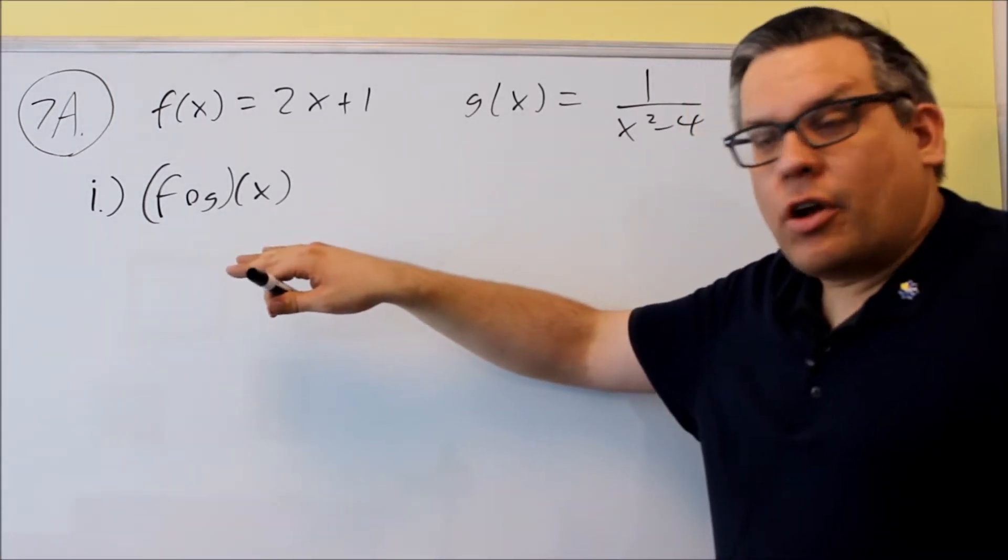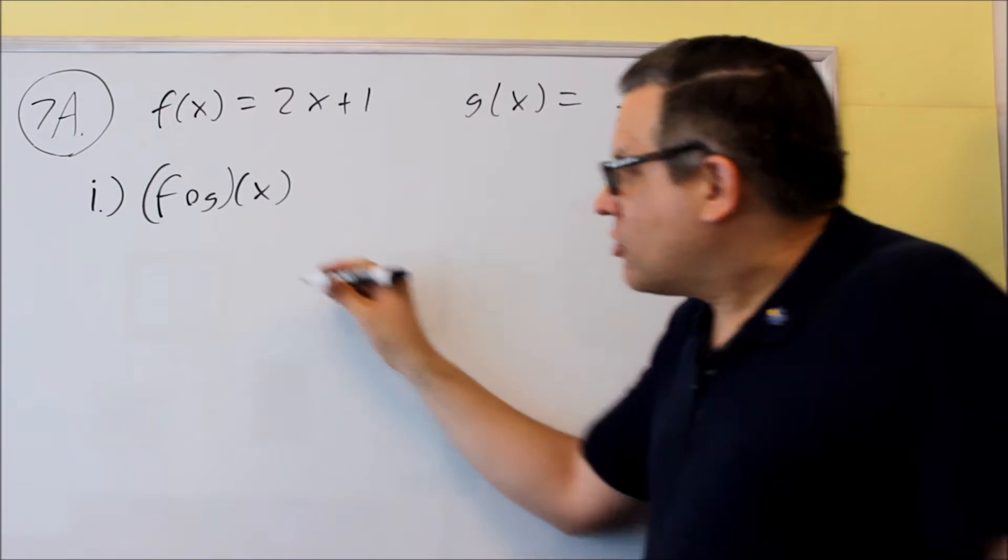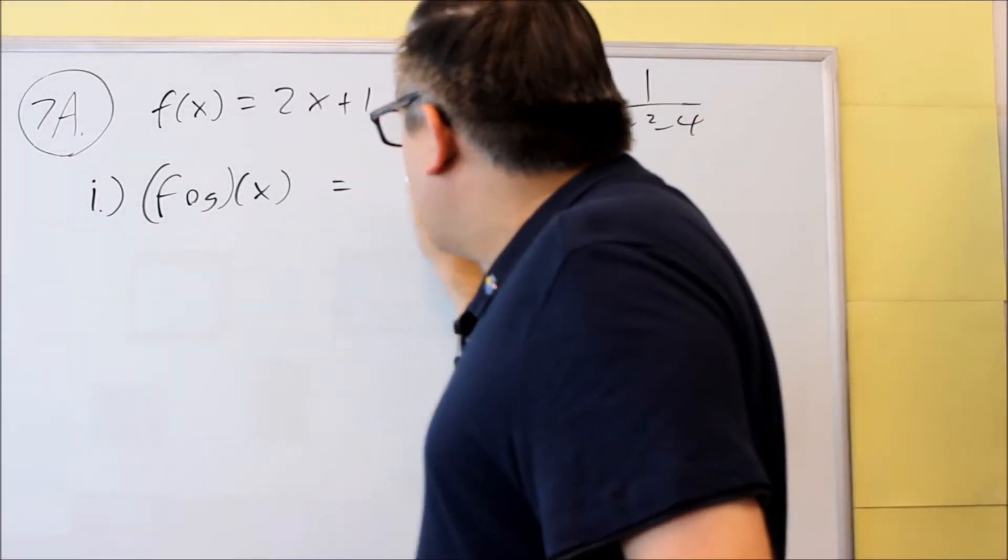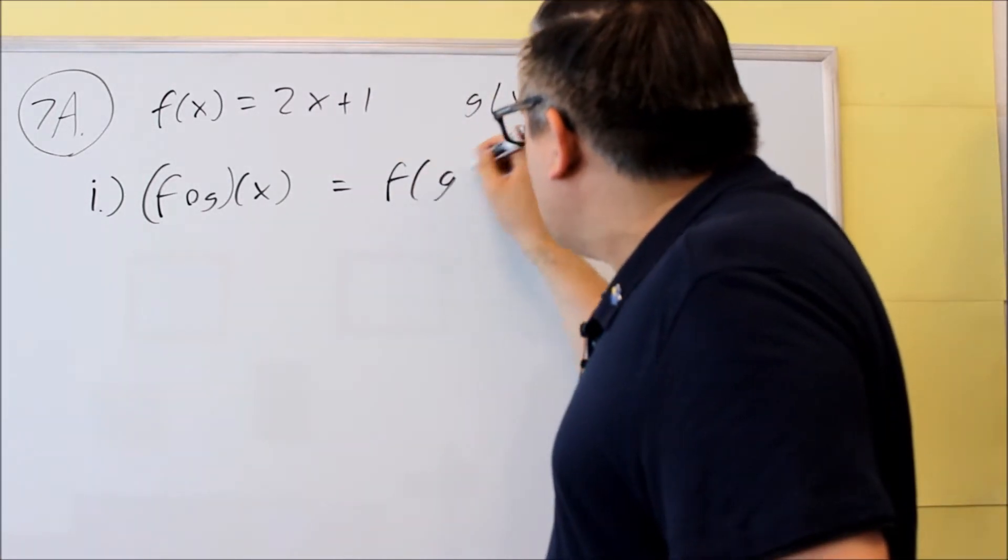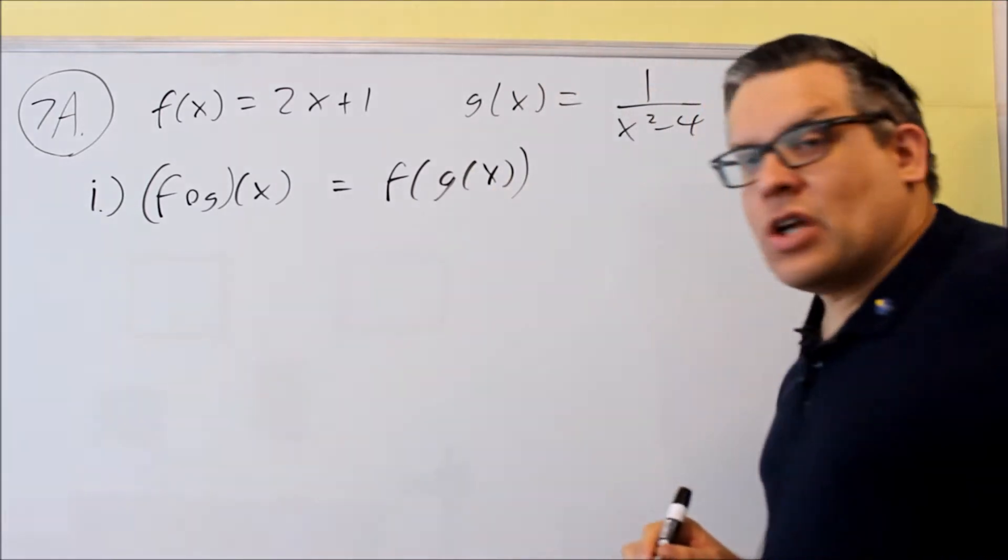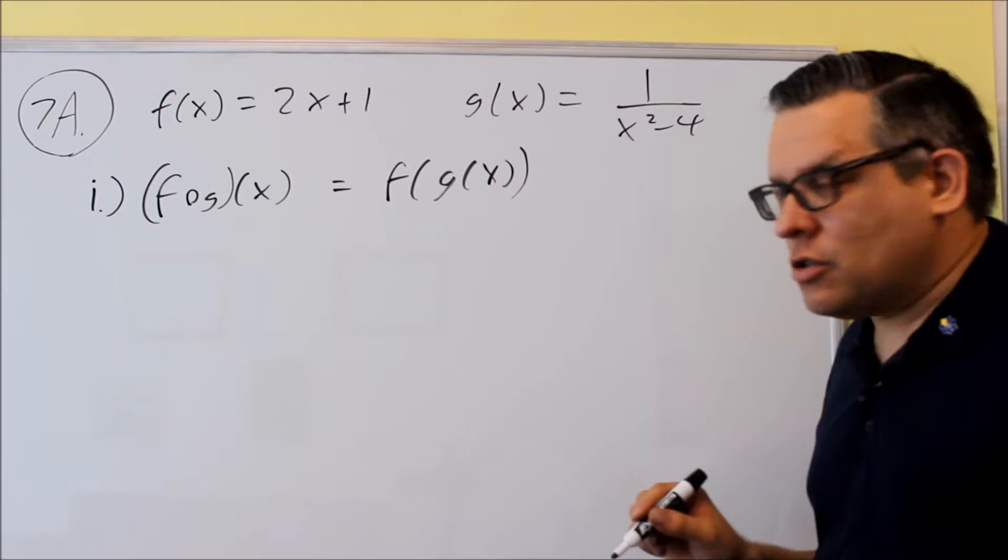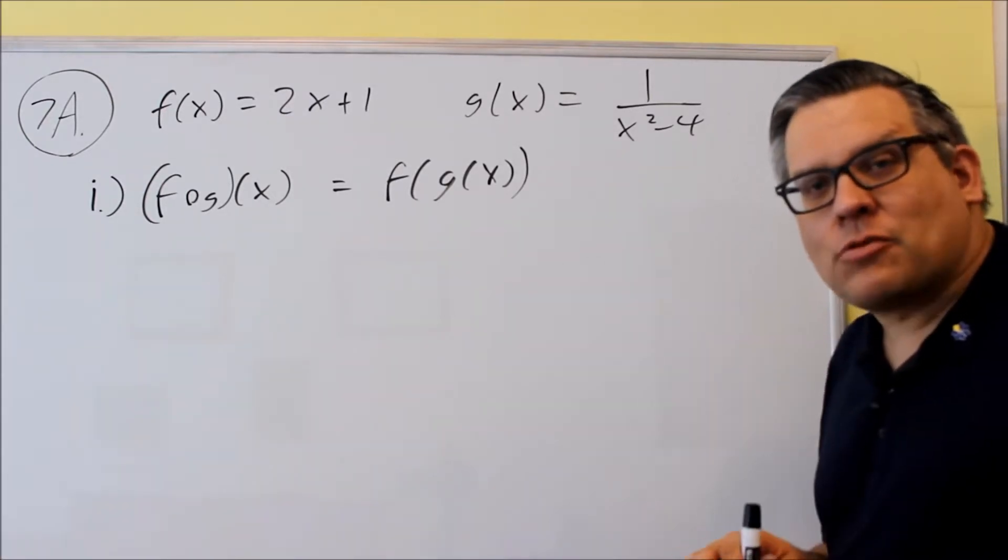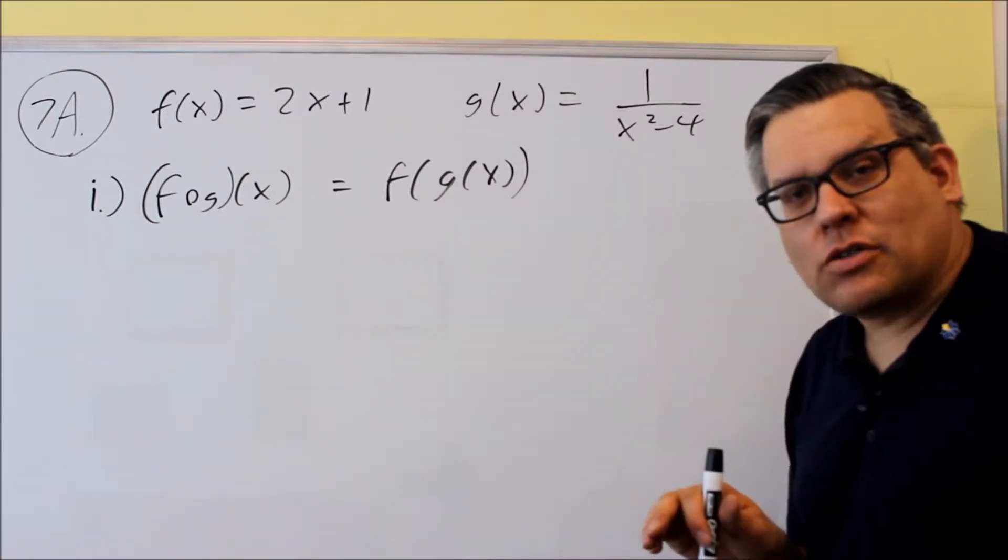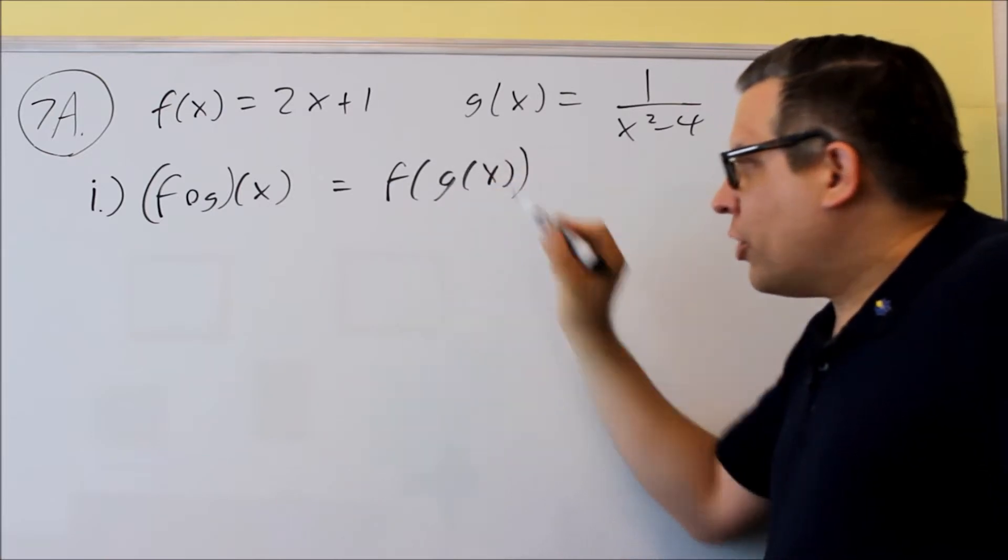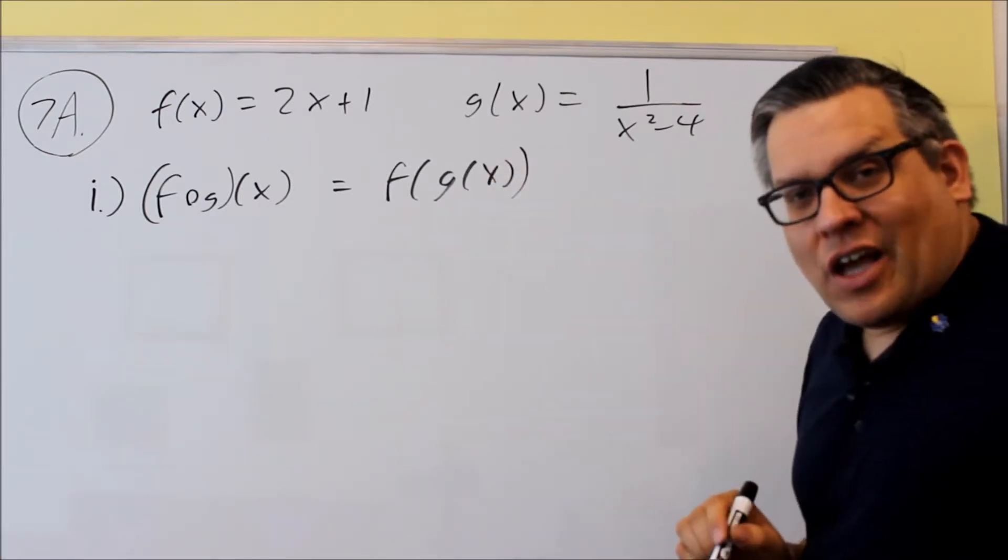Now the thing you want to make sure you know is the formula for that one, so you want to make sure what that really means. It's asking you to do this: it's saying put the g inside of the f. This is not multiplication, we're not multiplying f times g together, that's not what this notation means. It means we're putting g inside of the f.